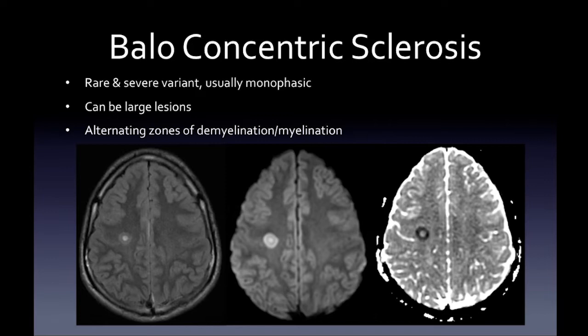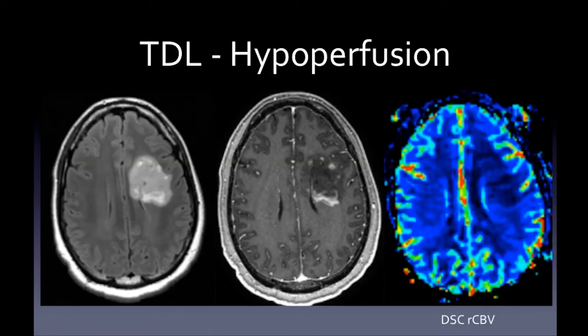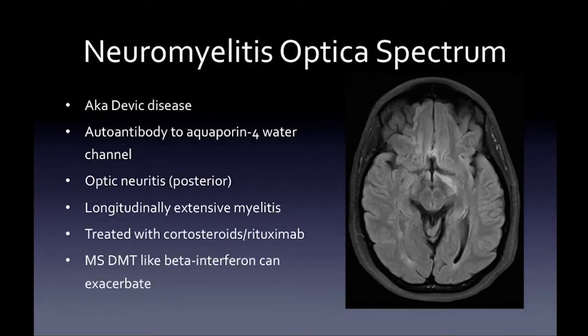Tumefactive demyelinating lesions (TDLs) can be large — greater than two centimeters — but are often solitary. The rim may restrict diffusion with incomplete peripheral enhancement along the leading edge of demyelination. Normal veins can be seen running through the lesion, and there is usually little to no mass effect for the lesion size. If you're considering tumor, get perfusion imaging: DSC perfusion in a TDL shows no increase in cerebral blood volume.